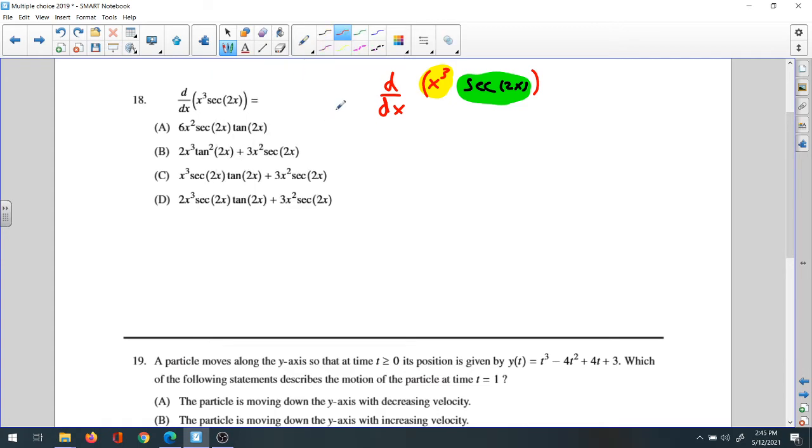Using the product formula, if this is u and this is v, the derivative will be u'v plus uv'. The derivative of the first, which is 3x², times the second, which is sec(2x).